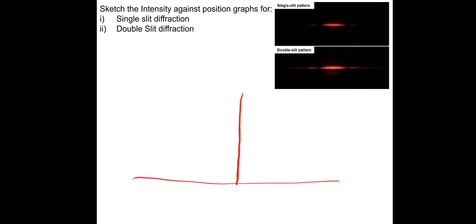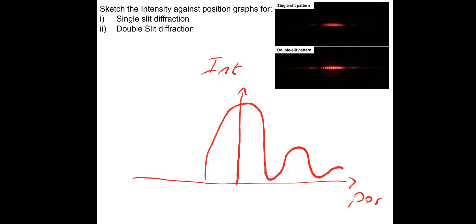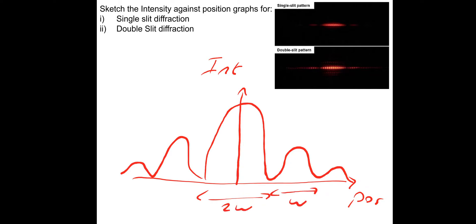So single slit diffraction - you should have done intensity against position. As you can see in the top right hand corner, the central fringe is much brighter than the subsequent fringes and it's also twice the width. So that's one done.